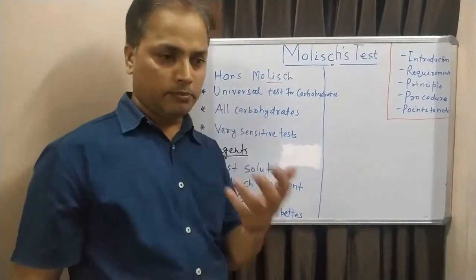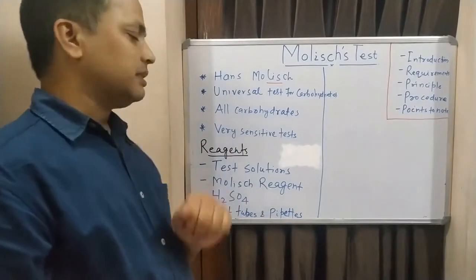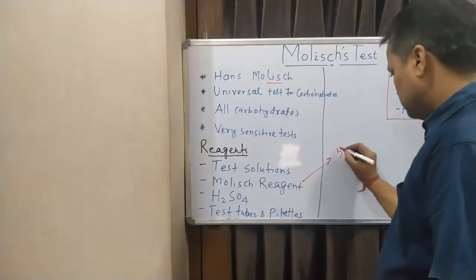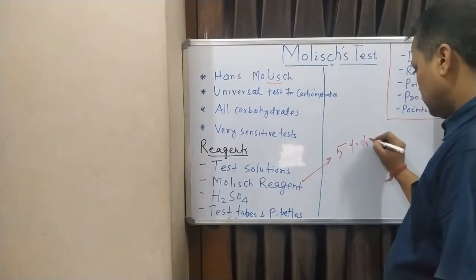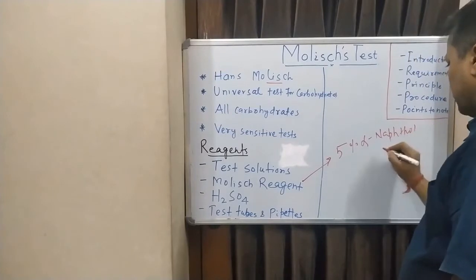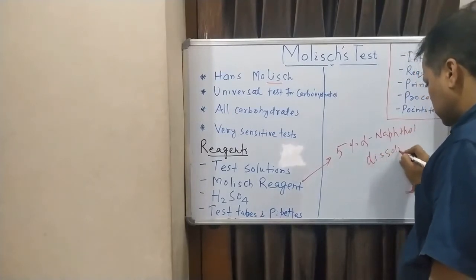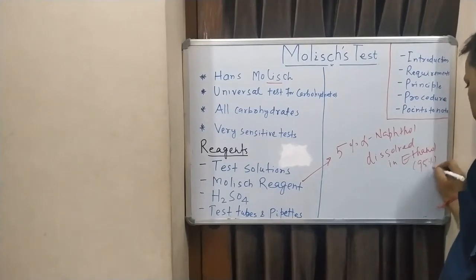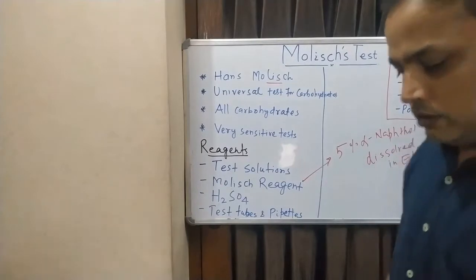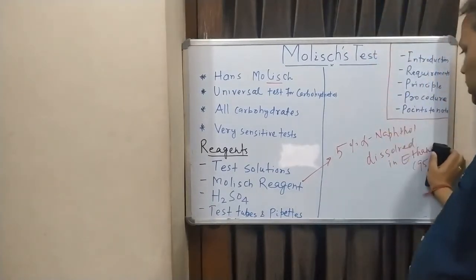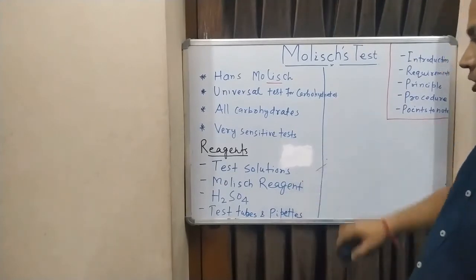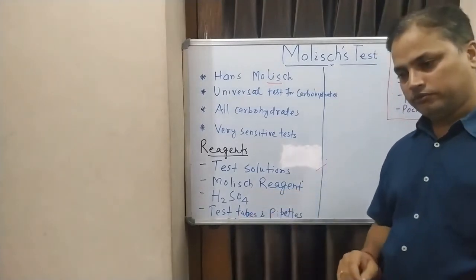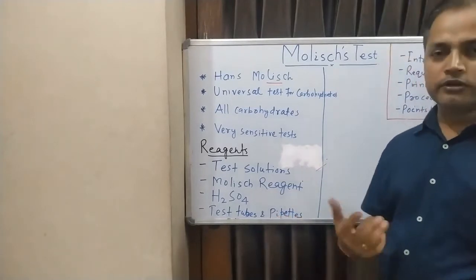The reagents required for the test are: first, the test sample; second, the Molisch's reagent, which is composed of 5% alpha-naphthol dissolved in 95% ethanol; third, concentrated sulfuric acid, which is one of the most important dehydrating agents; and finally, dry sterilized test tubes and different pipettes.